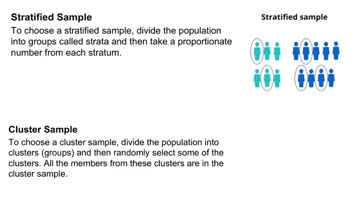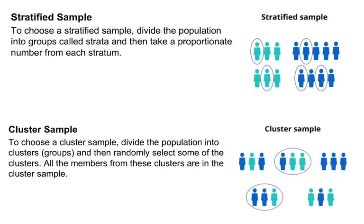Cluster sampling is very similar, where it also breaks up the population into smaller groups. But then we select some of these subgroups entirely — we take everyone within the selected group. For example, sampling statistics classes: I break everything into classes, then select a couple of classes and take everyone within that section. The key difference is that in stratified sampling you select from each group, whereas in cluster sampling you select entire groups.